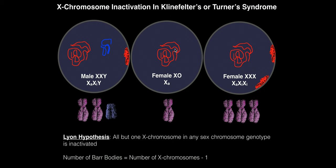Triple X syndrome — also called super female or superwoman syndrome — has genotype XXX with three X chromosomes. One X must be activated, and the other two are inactivated into bar bodies, both pushed against the walls of the nucleus. The notation is X-sub-a, X-sub-i, X-sub-i. Using the formula: three X chromosomes minus one equals two bar bodies. It's important to be able to apply this formula for test questions involving unusual genotypes.